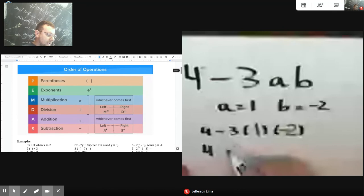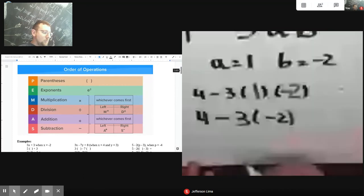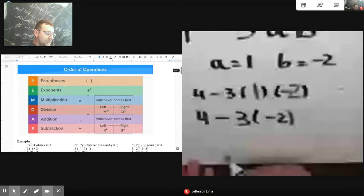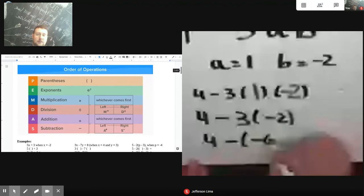And I leave the negative two in there. Okay? And then I'm going to do the next step. So the next step will be another multiplication between this three and this negative two. So four minus three times negative two, which is negative six. All right?